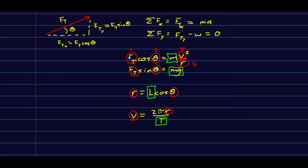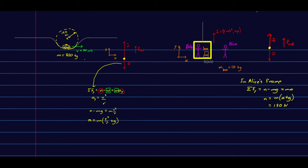I want to compare these two situations that we've seen. They look very different but they turn out to be almost the same. The first one was Alice and Bob from some number of lectures ago. Remember there was the box on the scale in the elevator and the elevator was accelerating up. We're going to compare that with the car going through this valley.